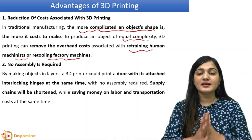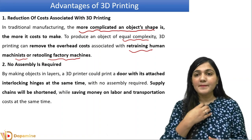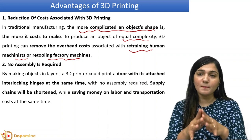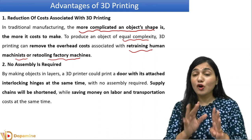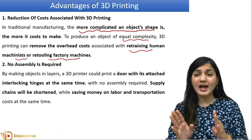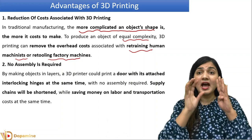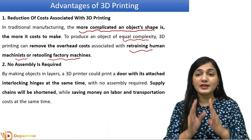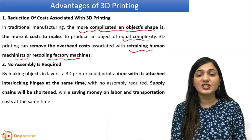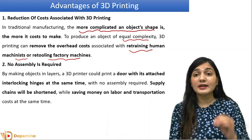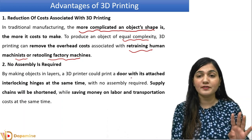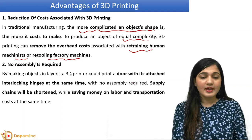For example, what is retraining a human machinist? If I have a factory and there is an employee who makes a complex structure, and that person leaves, I have to hire another person and retrain him. The cost of retraining will be much more. Along with this, the factory machines may be required to be retooled, which increases the overall cost.